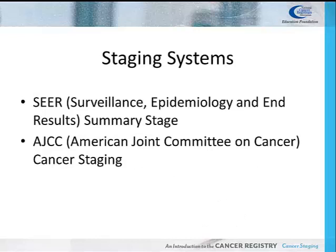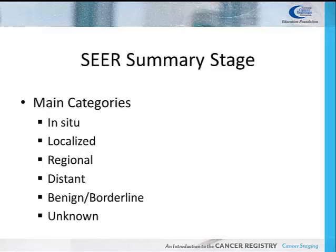The major staging systems used by most cancer registrars are SEER summary stage and AJCC cancer staging. SEER summary stage has six main categories: in situ, localized, regional, and distant — we will discuss these four categories in a moment. Then there is the benign/borderline category, which is used to summary stage benign and borderline neoplasms for the brain, intracranial glands, and other CNS tumors. The final category is unknown, which is when there is insufficient evidence to adequately summary stage the tumor.